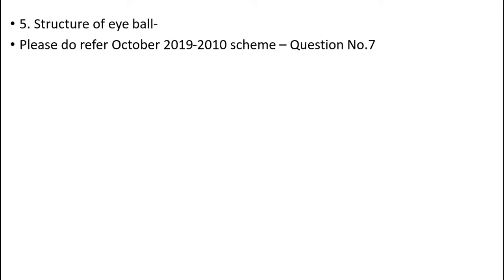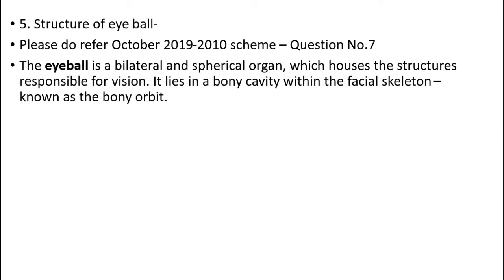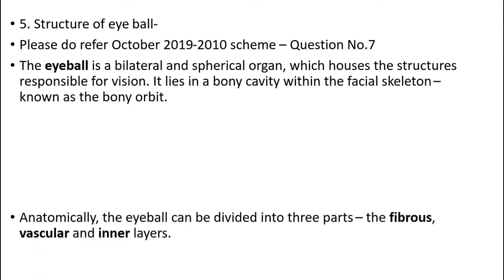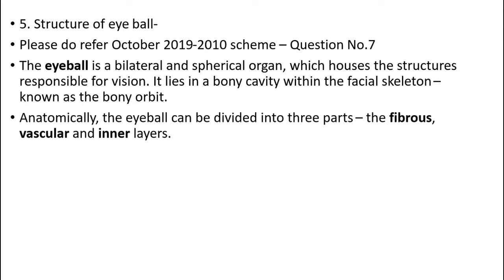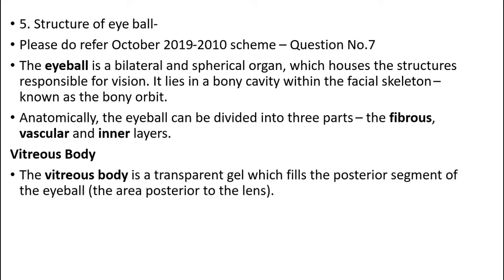Structure of the eyeball. This was already referred to in October 2019-2010 scheme. The eyeball is the bilateral and spherical organ which houses the structures responsible for vision. It lies in a bony cavity within the facial skeleton known as the bony orbit. The eyeball can be divided into three parts: fibrous, vascular, and inner layers.